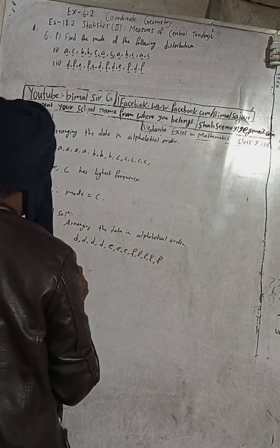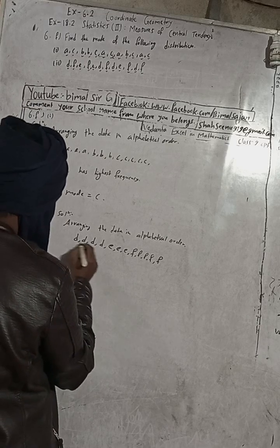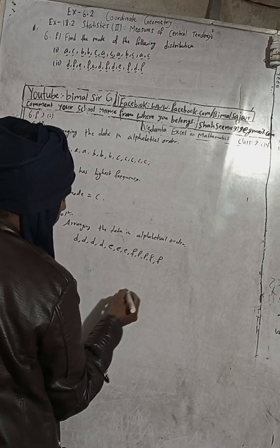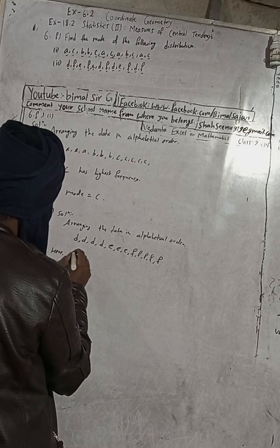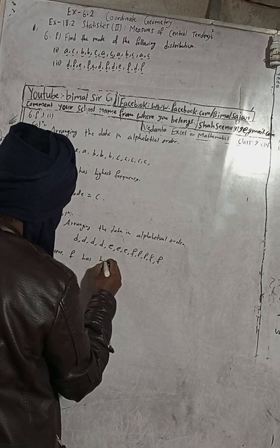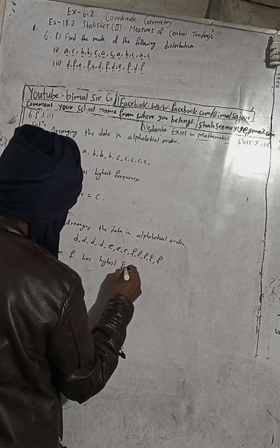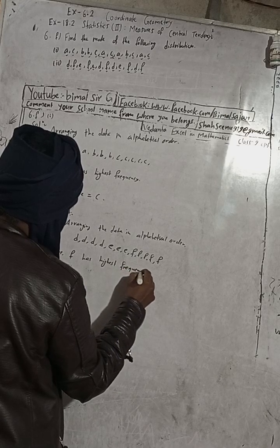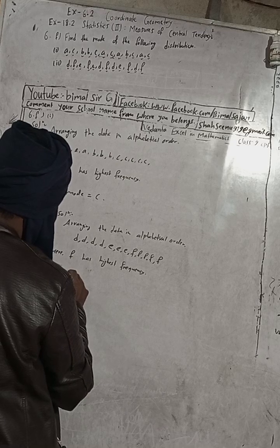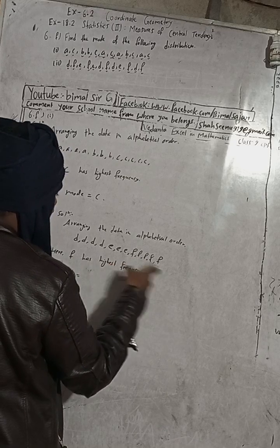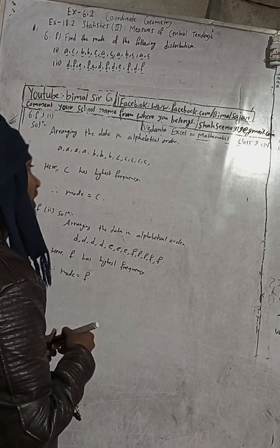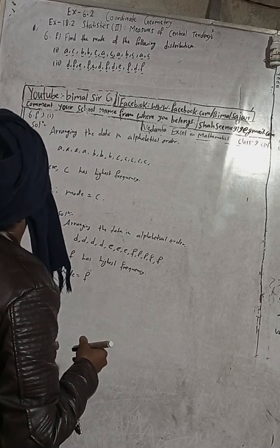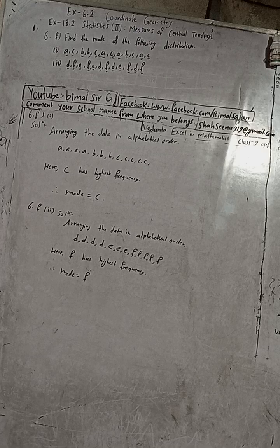F has the highest frequency of 5, therefore mode is equal to F. F is the mode. Mode means the data value that has the highest frequency. So this is the solution. Now I will do the next question of 6.